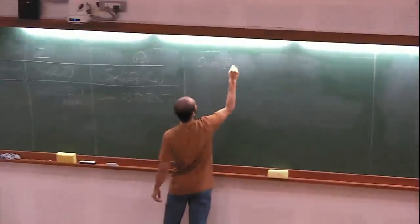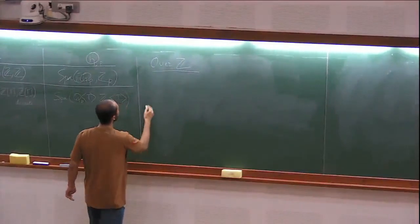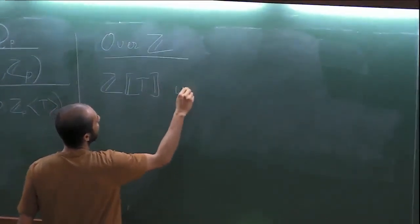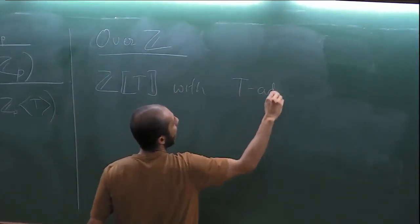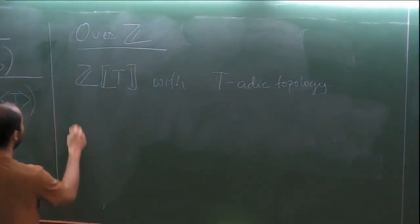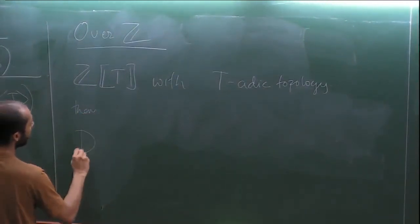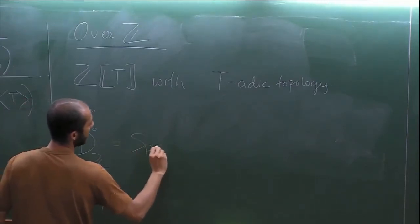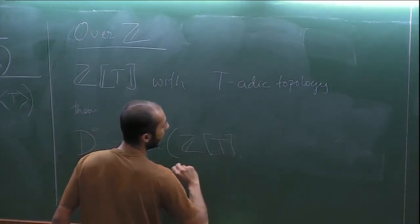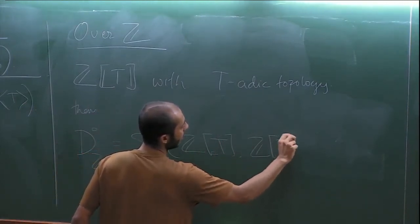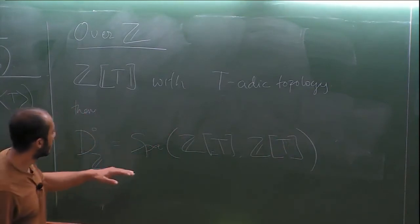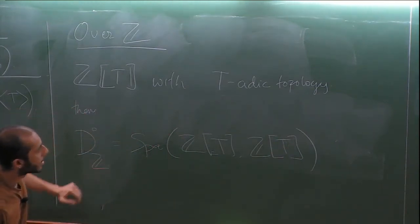Over ℤ, we take the power series ring ℤ[[T]] with the T-adic topology. Then the open unit disk D⁰_ℤ = spa(ℤ[[T]], ℤ[[T]]). This is an adic ring and hence a sheafy Huber pair, and its spa is the open unit disk. The functor of points for a complete sheafy Huber pair (A, A+) maps to the topologically nilpotent elements of A — elements whose powers tend to 0 — which is exactly the right analog of the open unit disk.